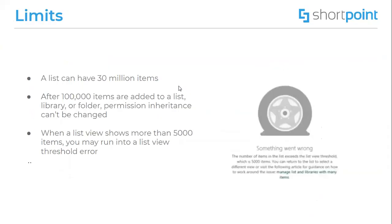Lists and libraries also have their own limits. Microsoft provides information that libraries and lists can store up to 30 million items or files in a SharePoint list library. But after 100,000 items are added to a list or library, permission inheritance cannot be changed. Filtered views of large lists have a similar experience to other lists. However, when a list view shows more than 5,000 items, you may run into a list view threshold error. There are prepared solutions from Microsoft on how to avoid this error, all described in their articles.